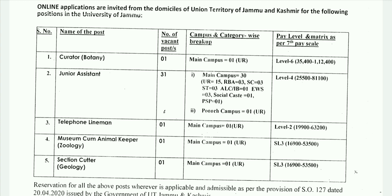These posts are for the main campus. Except Junior Assistant, which is also available in Punch Campus. You can see the categories: UR, RBA, and EWS.